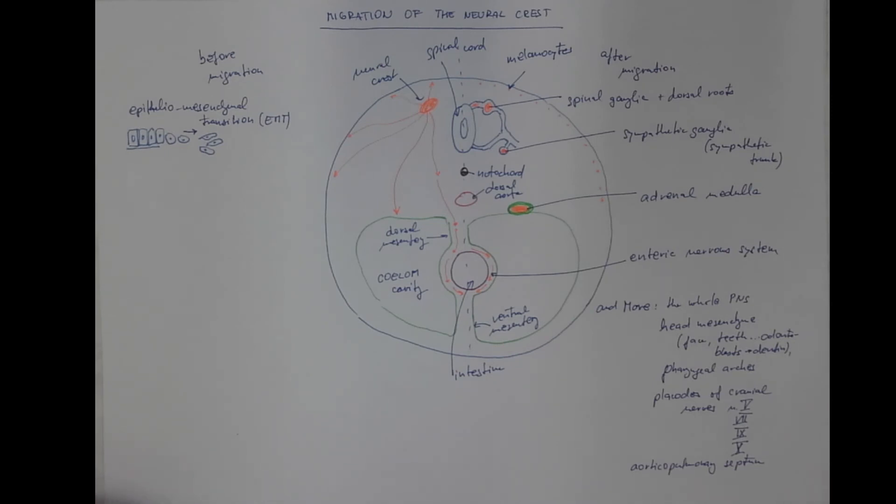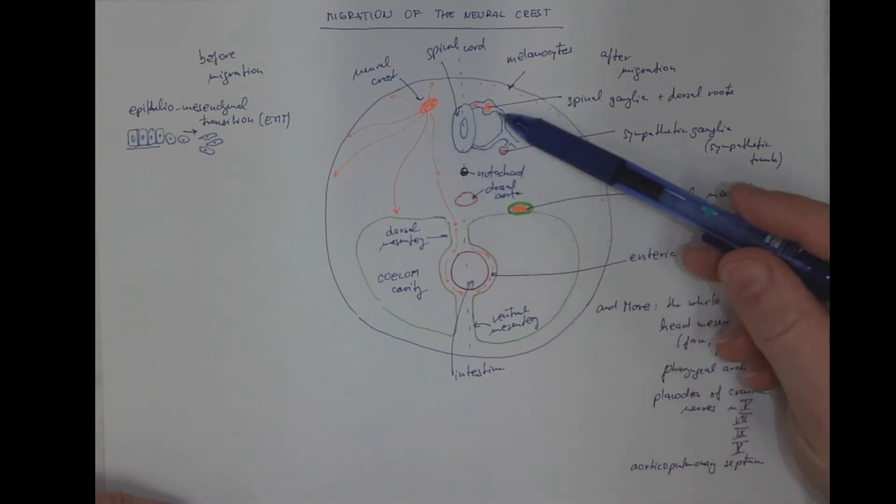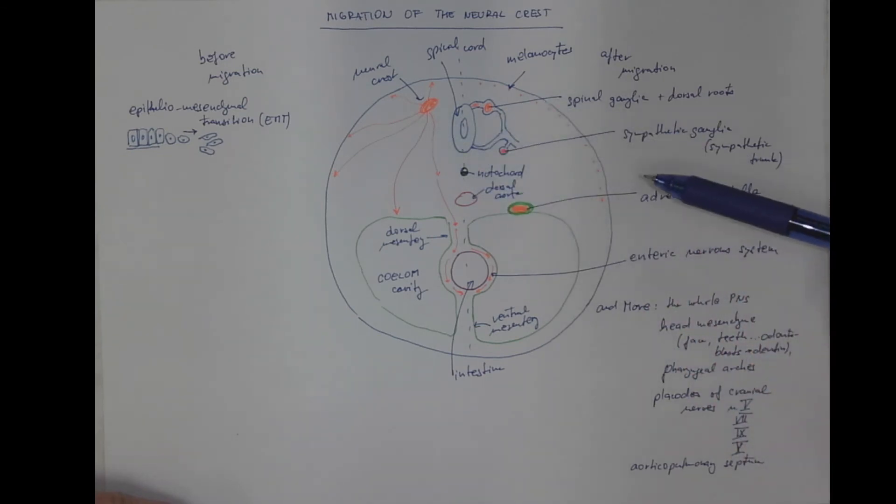Actually, why do we care? We care because any interference with the migration pathways of the neural crest cells might cause some developmental defects or even syndromes with more defects.